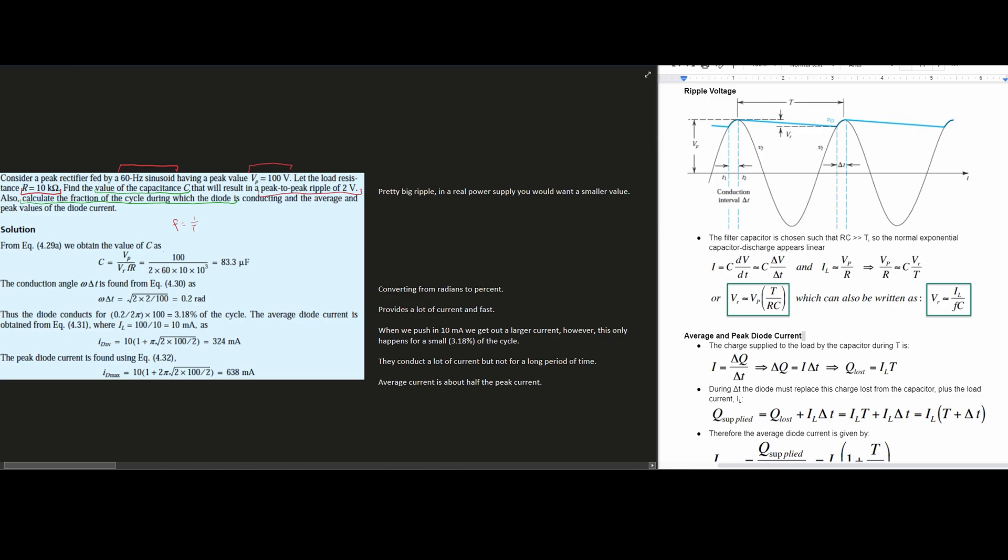Our Vp, if we plug in our values, is 100, and then this is going to be over R2 because our Vr is peak-to-peak ripple. That's 2 volts times our frequency, which is 60, times the resistance, which is 10 kilo-ohms, and that's going to give us approximately 83.3 microfarads.